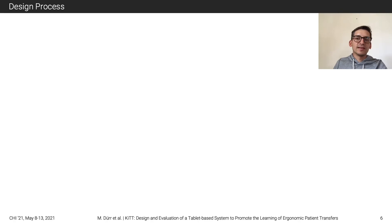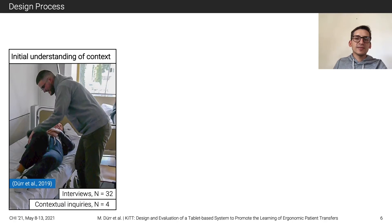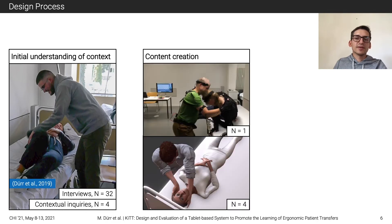After this overview on KIT, let's also take a brief look at some parts of our design process. The design of KIT was based on a previously conducted qualitative study, which provided an initial understanding of the context. The content for KIT was created together with nursing care teachers. We used 3D motion capturing to record data for eight different patient transfers together with a professional teacher. Afterward, we post-processed the captures, created 3D animations, and reworked the animations based on the feedback of four nursing care teachers. The teachers were also involved in the creation of further content, like the instruction texts and the audio tracks.